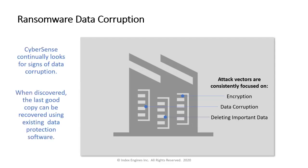The concept with CyberSense is to continually look for these signs of corruption — to analyze and audit the data and see if there are signs of encryption, corruption, or deletion. As those are discovered, you can roll back to the last good version of the backup, which is the last good or pre-attack data.